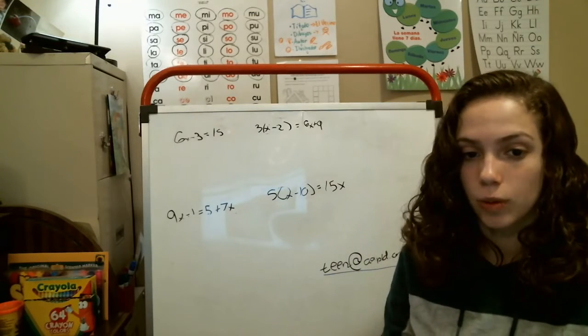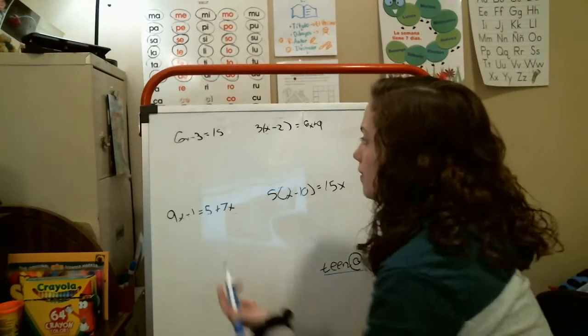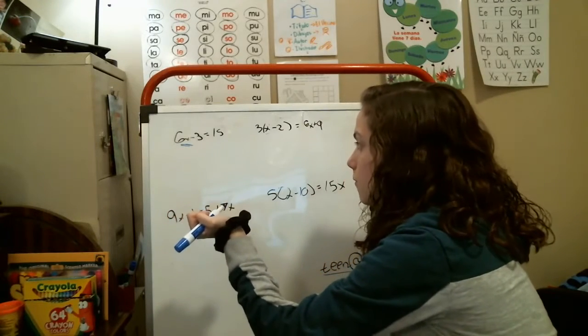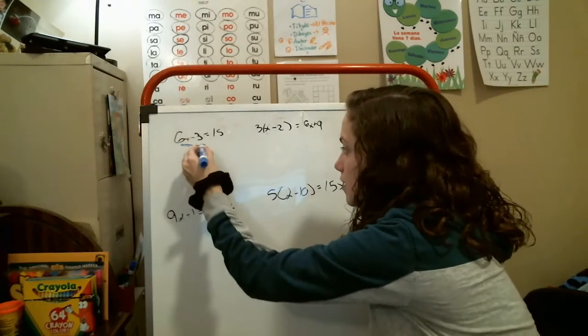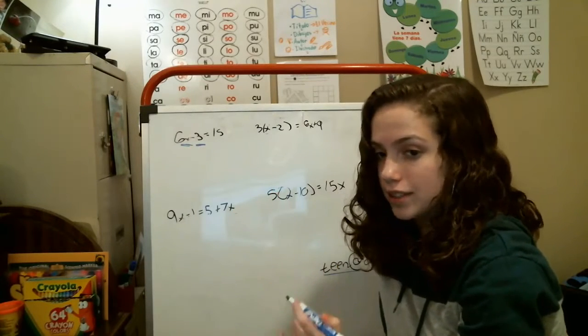We are going to start up here because it's a pretty basic equation. The whole point of these is to get this x alone. In order to do that, the first thing we have to do is get rid of this because it is not part of the x value. In this situation, you would start here.